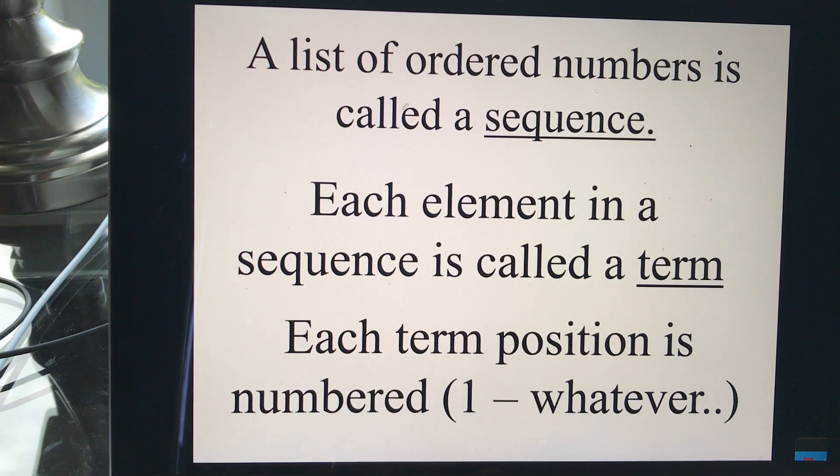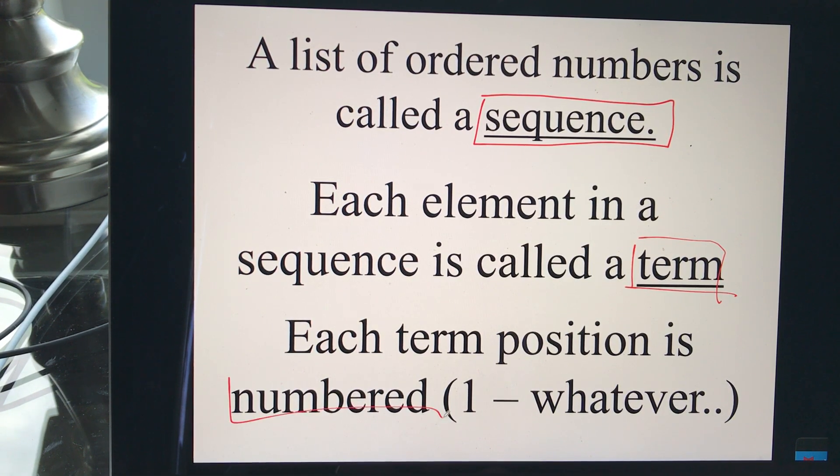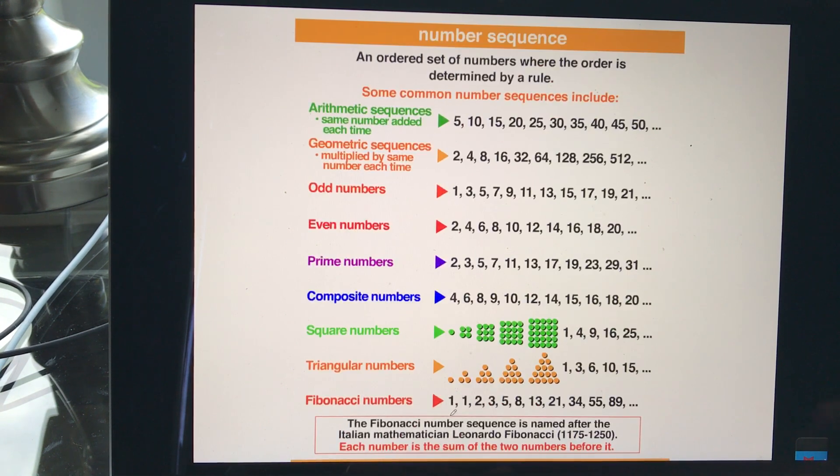Now, just some terms here. A list of ordered numbers is called a sequence, and each element in the sequence is called a term. So the sequence is a list, and everything in the sequence is called a term. And each term position, we're going to number. So we're going to have each position numbered. So start at 1, 2, 3, and so on.